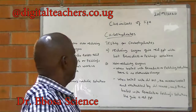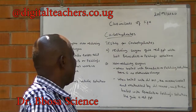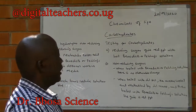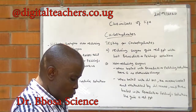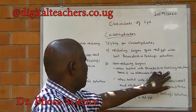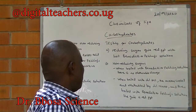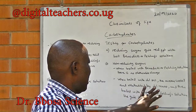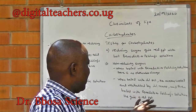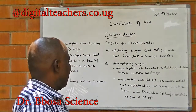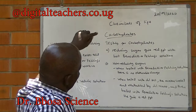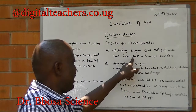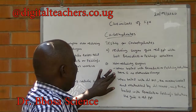Testing for carbohydrates. A) Reducing sugars give a red precipitate with hot Benedict's or Fehling's solution. B) Non-reducing sugars: when boiled with Benedict's or Fehling's solution, the result is unchanged. However, when boiled with hydrochloric acid, the mixture cooled and neutralized by sodium hydroxide, then boiled with Benedict's solution, it will give a red precipitate. So to distinguish a reducing sugar from a non-reducing sugar: reducing sugar forms a red precipitate with Benedict's or Fehling's solution, while non-reducing sugars do not.